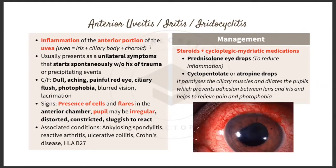The clinical features are a dull aching painful red eye, ciliary flush, photophobia, blurred vision, and even lacrimation. Some signs to note include the presence of cells and flares in the anterior chamber, and the pupil may be irregular.